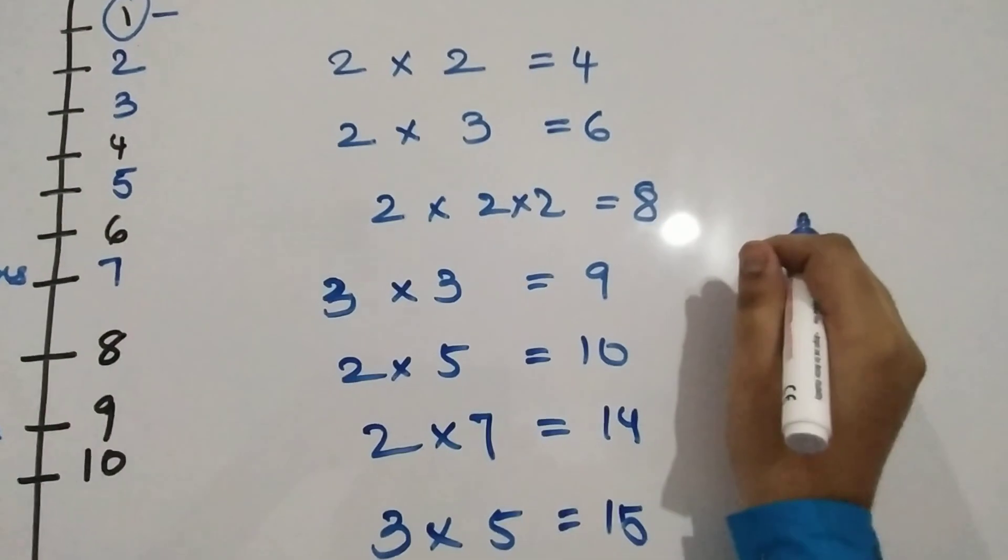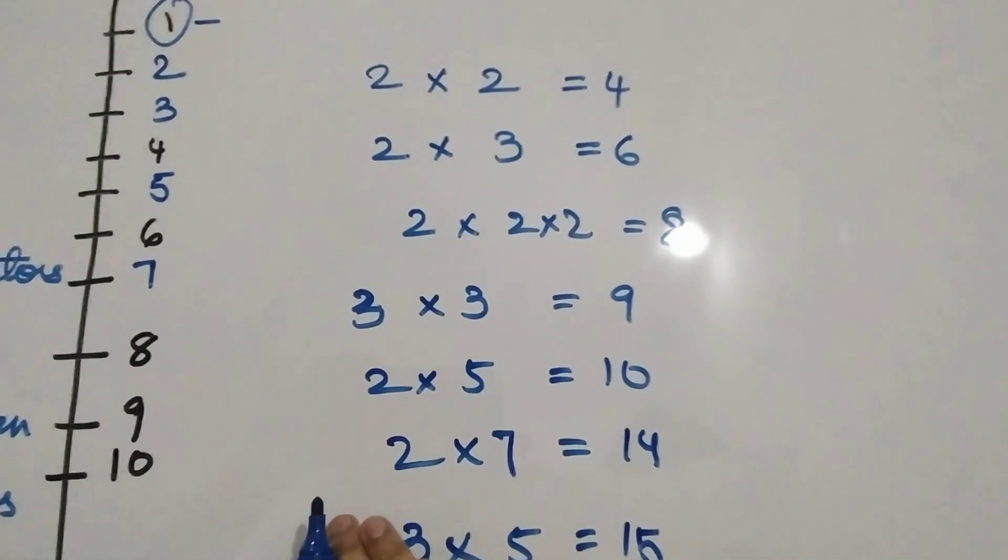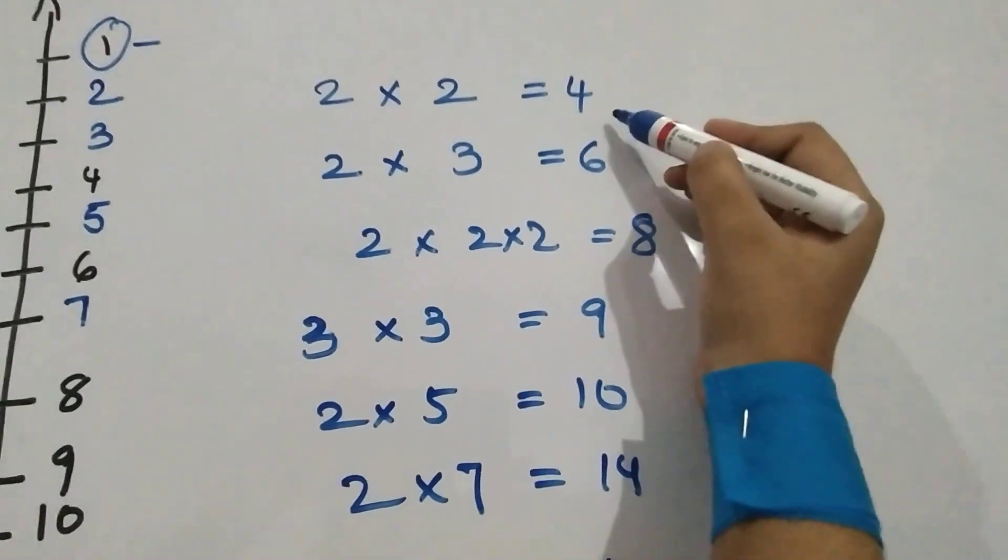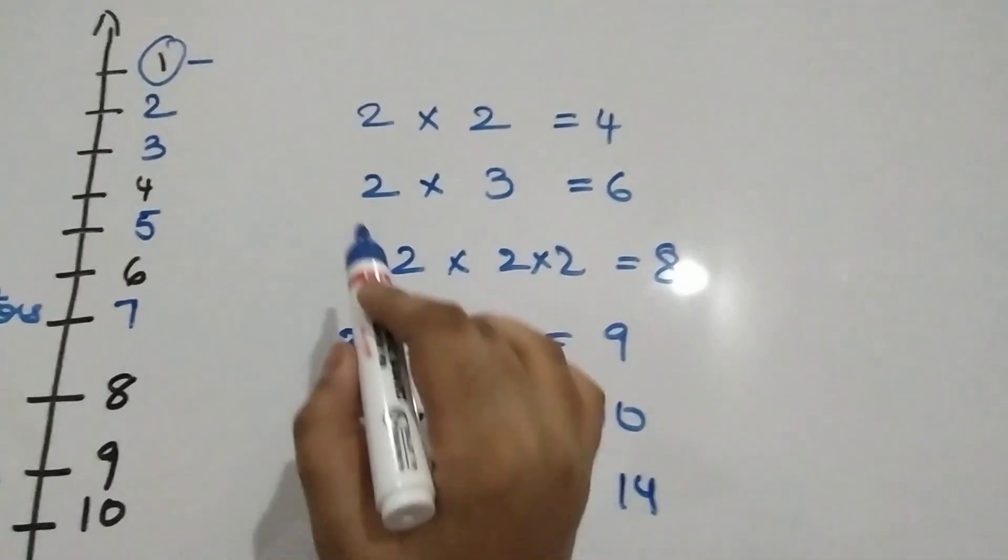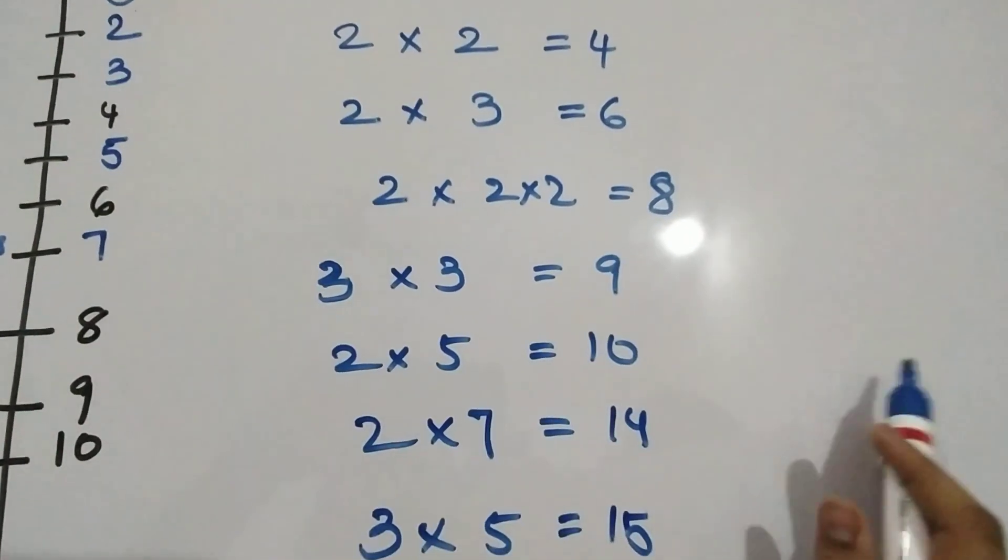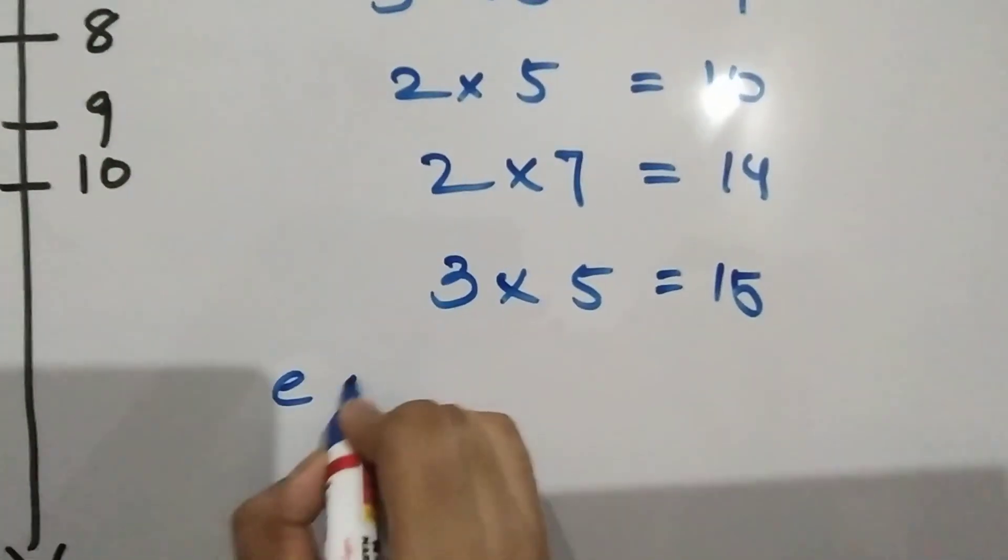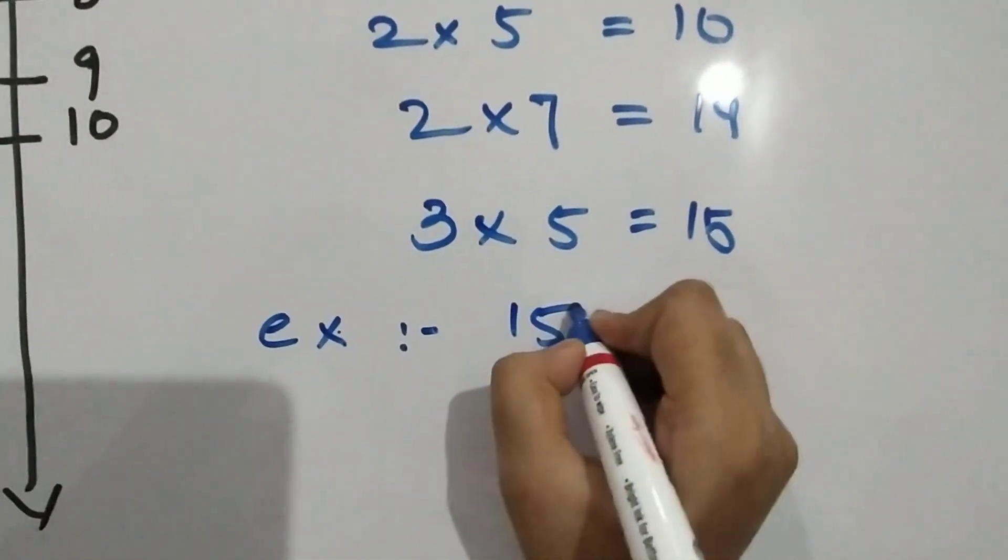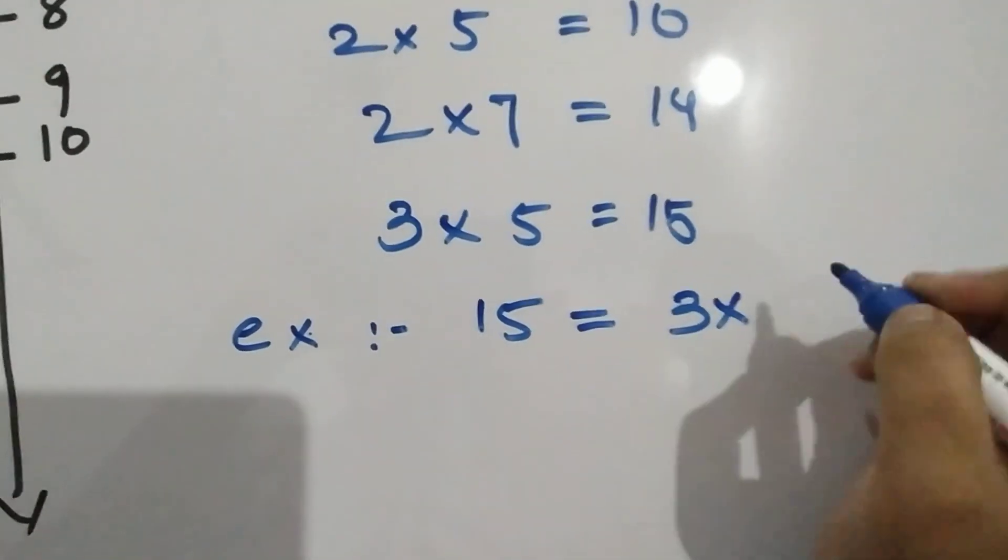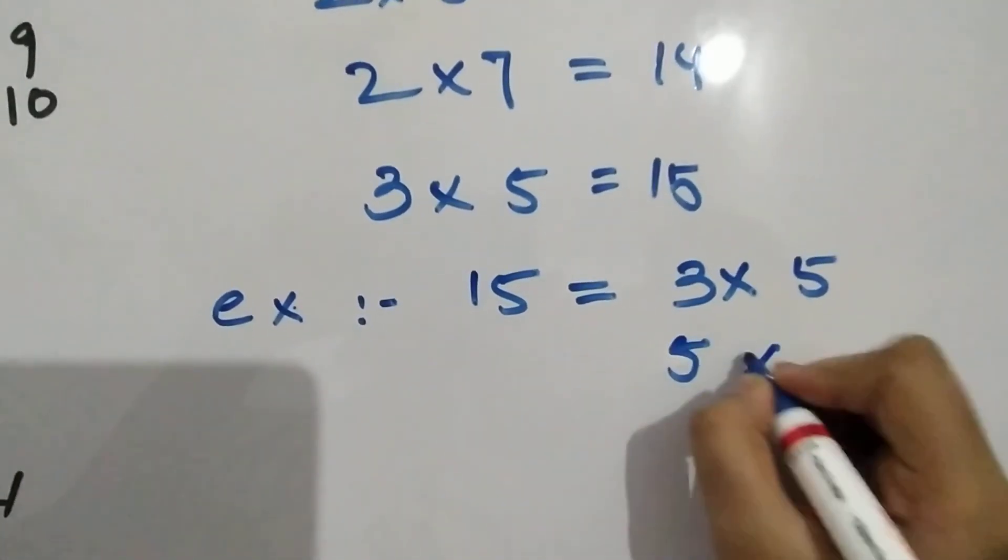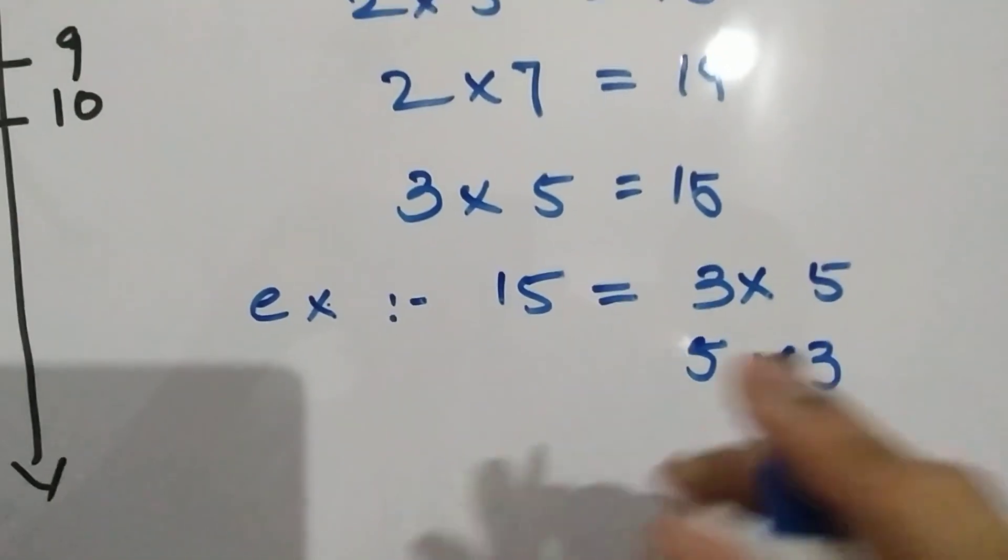If you think in reverse order, we can see that composite numbers can be factorized as a product of prime numbers in a unique way apart from the order.